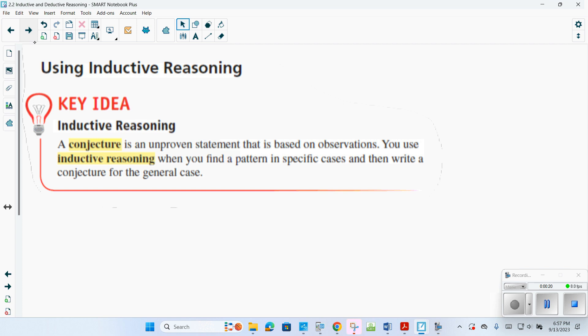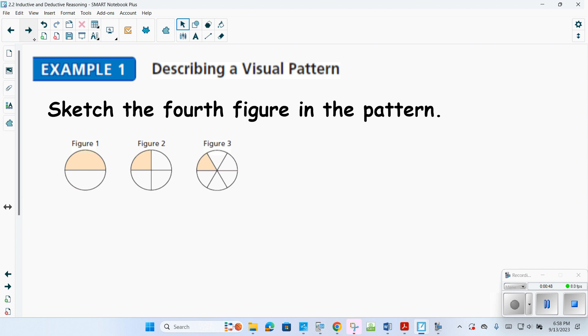Inductive is a conjecture, an unproven statement that's based on observations. Basically, inductive reasoning is you're using common sense, or you're coming up with a pattern and thinking you know the next number. For instance, if I went 2, 4, 6, 8, and you ask what's the next number, you would probably say 10. That's inductive reasoning. You're looking at a pattern and then trying to come up with a conjecture for what's going to happen next.